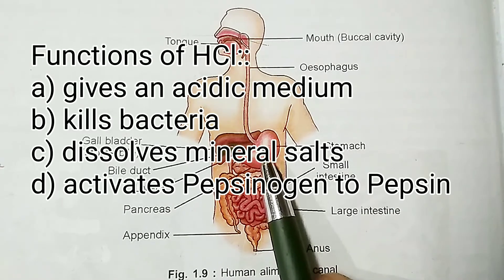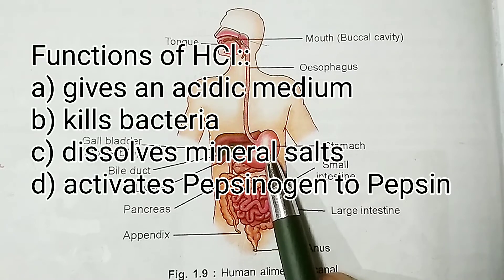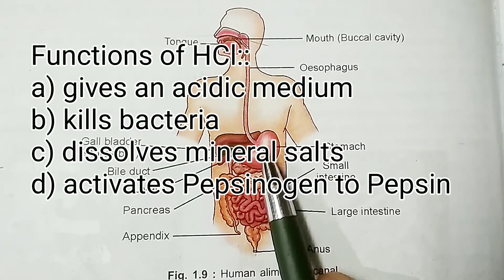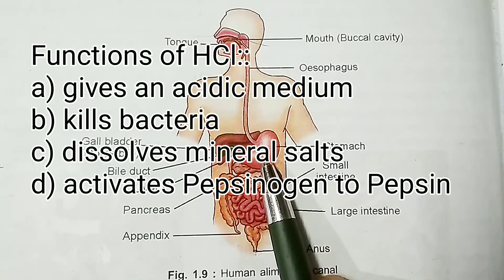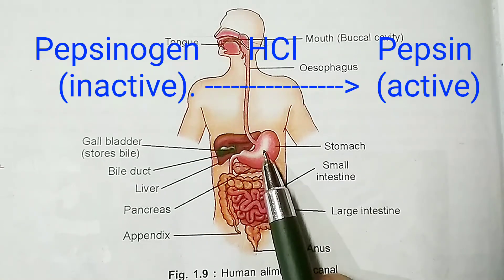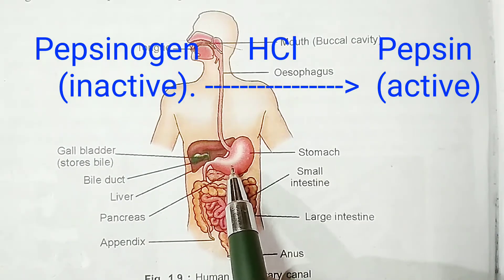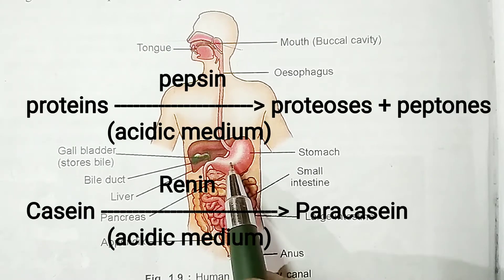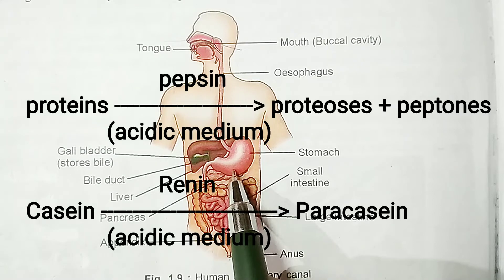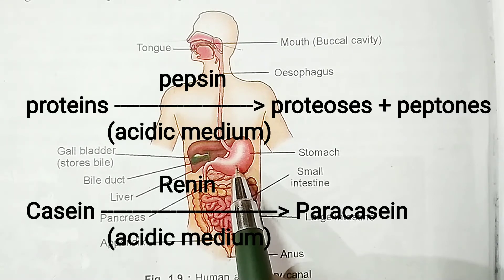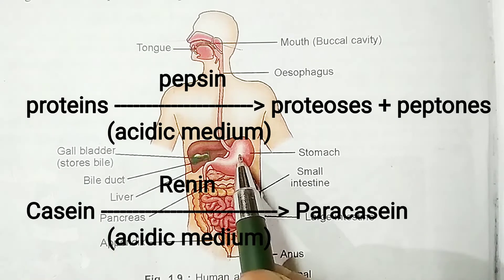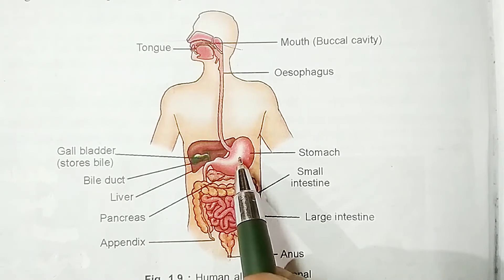Hydrochloric acid also kills bacteria that may have come along with the food, dissolves mineral salts, and activates pepsinogen to pepsin — and pepsin helps in the digestion of proteins by breaking them down into peptones. Inside the stomach, another enzyme called rennin converts casein of milk into paracasein, which is further digested by pepsin. So inside the stomach, the two major enzymes that help in the digestion of proteins are pepsin and rennin.